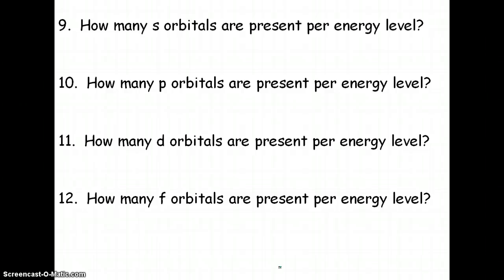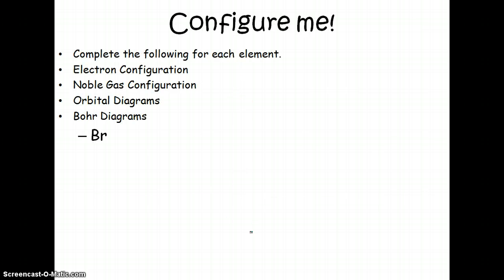How many S orbitals per energy level? Well, if you remember back, there's only ever one sphere per energy level. So there's one. P, you remember there's three, X, Y, and Z axis. D, there are five. And F, there are seven. So it's basically the odd numbers, and it's half of how many total electrons they can hold.